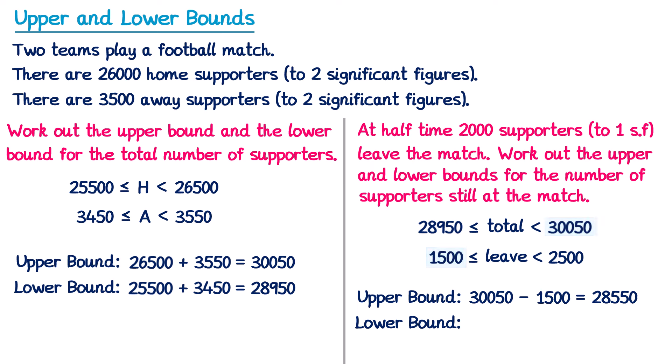Now for the lower bound, we think in a similar way. If we want the lowest amount of people still at the match, we start with the lowest total — 28,950 — but we want the maximum amount to leave — 2,500. So 28,950 subtract 2,500 gives a lower bound of 26,450.